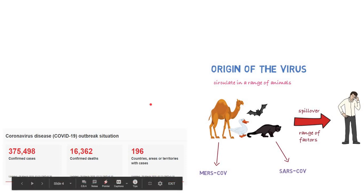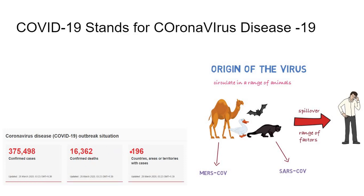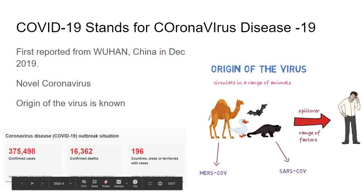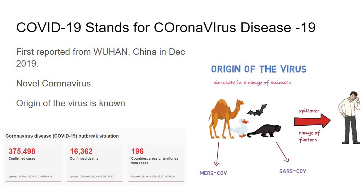These coronaviruses were directly transmitted from animals; the human-to-human transmission was not as severe as COVID-19. Now the current situation: as of 26th March 2020, we have crossed 4 lakh cases and 20,000 deaths in 196 countries. COVID-19 stands for coronavirus disease 19 — it is named 19 because it was first reported in Wuhan, China in December 2019. Initially it was called novel coronavirus, as nobody would have known about this virus before November 2019.